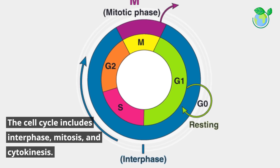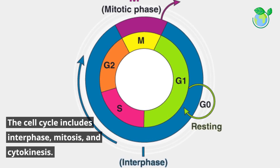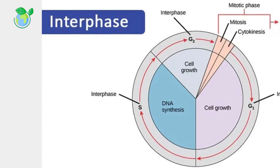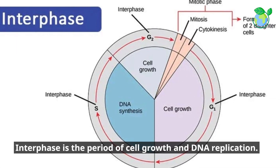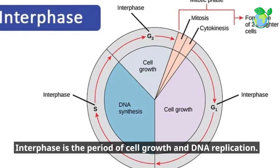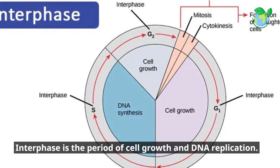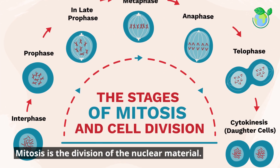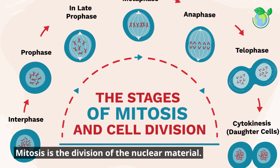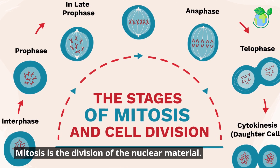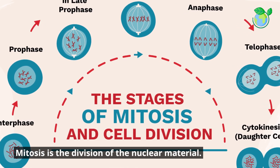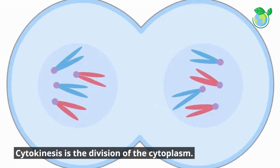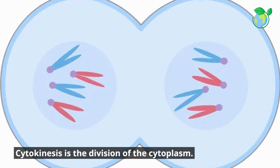The cell cycle includes interphase, mitosis, and cytokinesis. Interphase is the period of cell growth and DNA replication. Mitosis is the division of the nuclear material. Cytokinesis is the division of the cytoplasm.